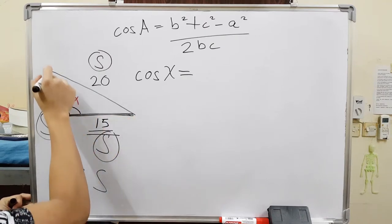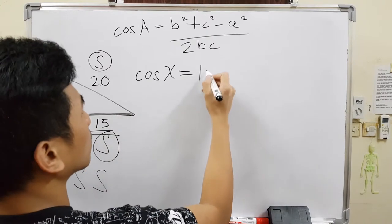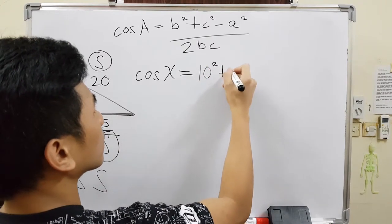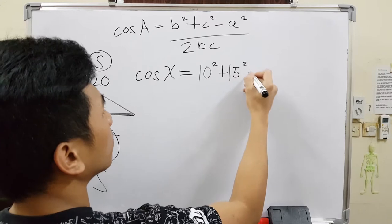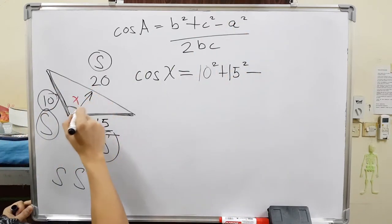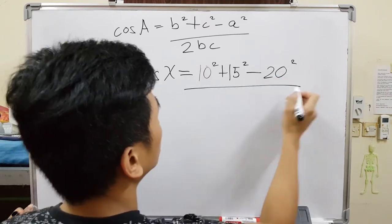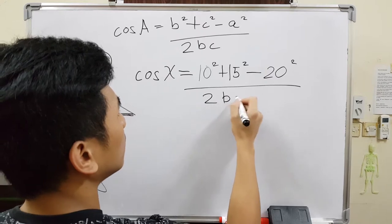So this. As you can see, this side over here and this side. So they are the one that makes up the angle x. So all you have to do is to copy 10 squared plus 15 squared minus. And then this A is basically the one opposite to our missing angle. So 20 squared.